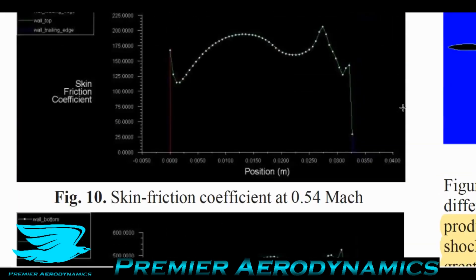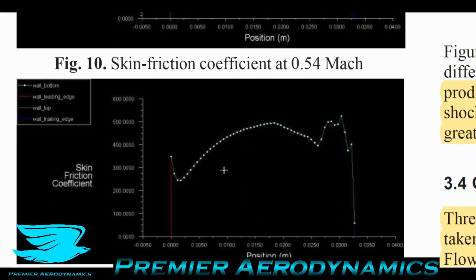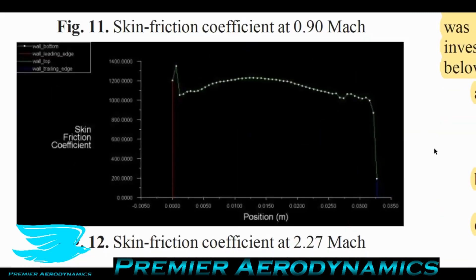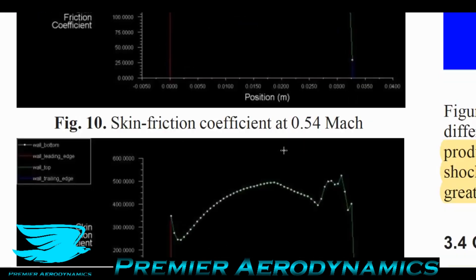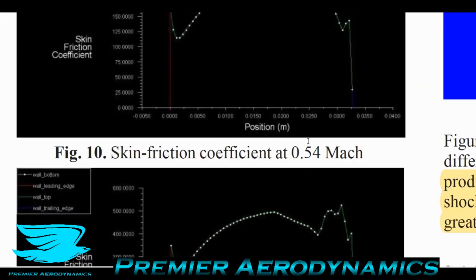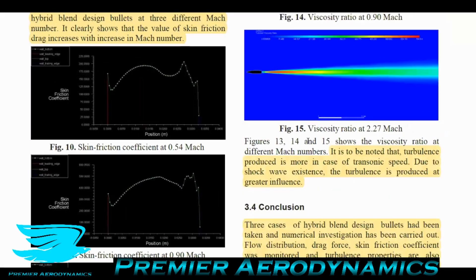At Mach 0.54 and 0.9 you have local maximums at the nose, where the secant meets the tangent radius, and at the seating area. Interestingly, at Mach 2.27 this curve dramatically flattens. You get a dramatic increase at the nose then the rest of the bullet is fairly flat and much lower. Then at the base there's a drop-off. There's really only one global maximum at the nose, whereas for transonic and subsonic you get quite a few different local maximums. It's not nearly as flat.